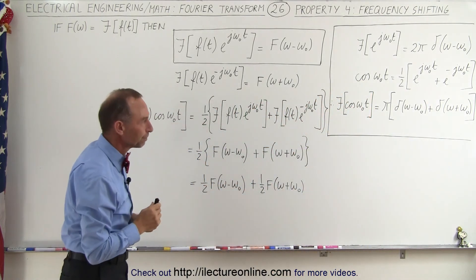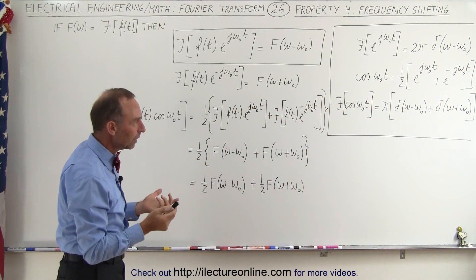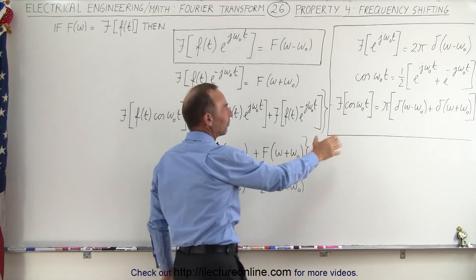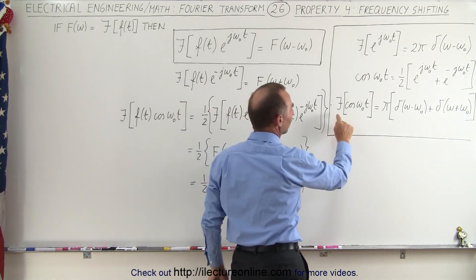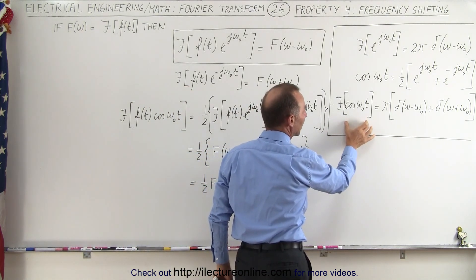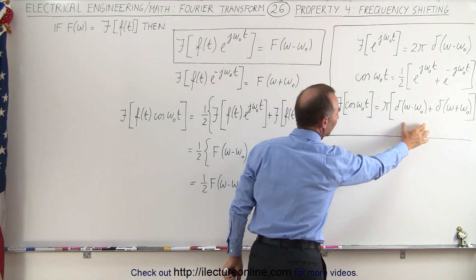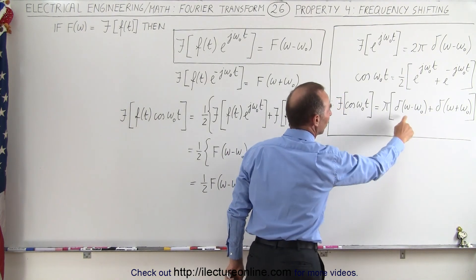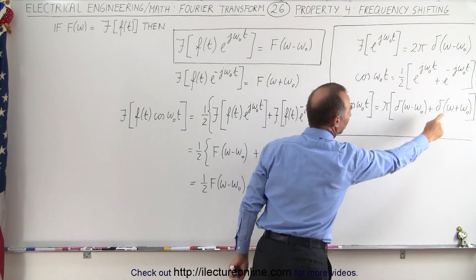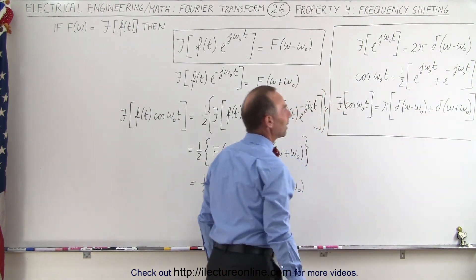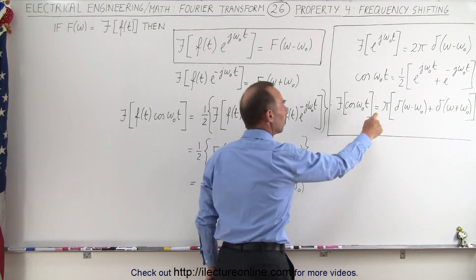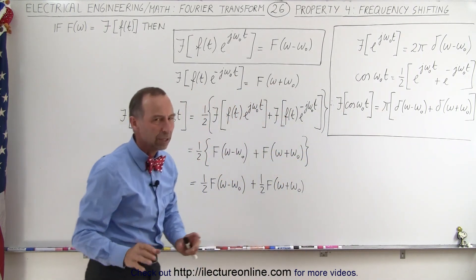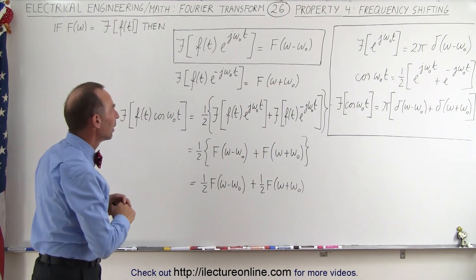So that's where we're going with this. Also as a reference, the Fourier transform of the cosine of omega t is equal to the sum of the two delta functions — omega minus omega sub nought and omega plus omega sub nought — all multiplied times pi. That will come in handy soon enough.